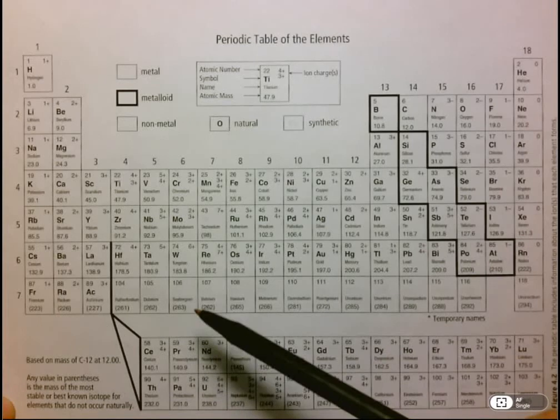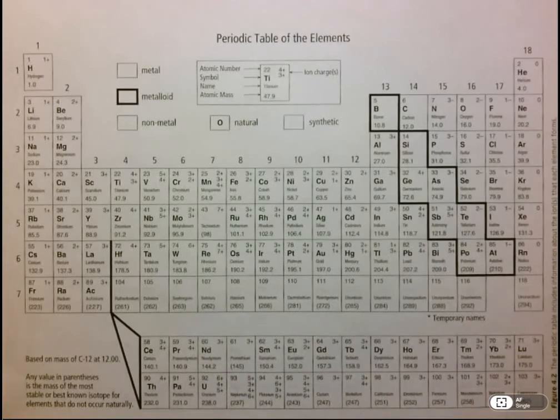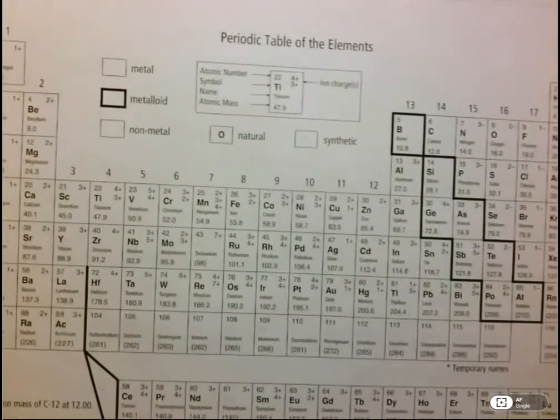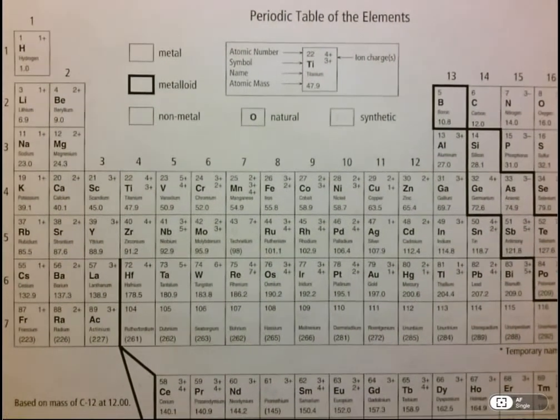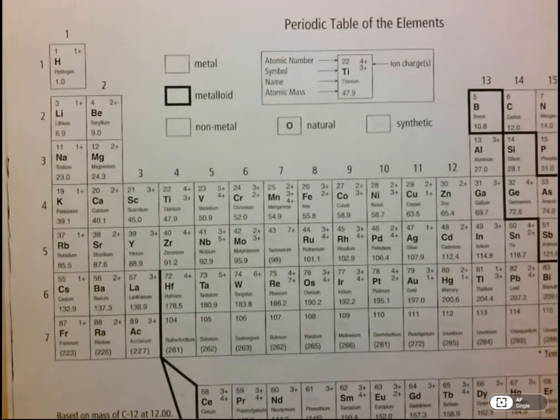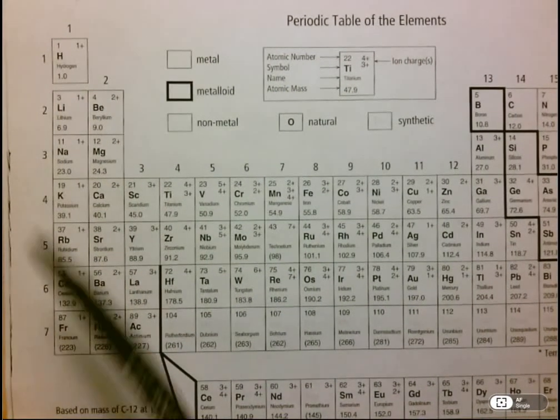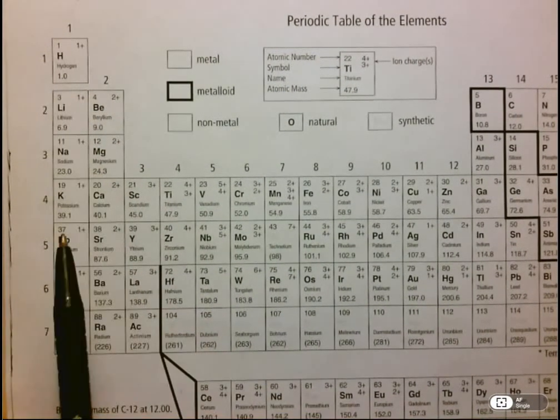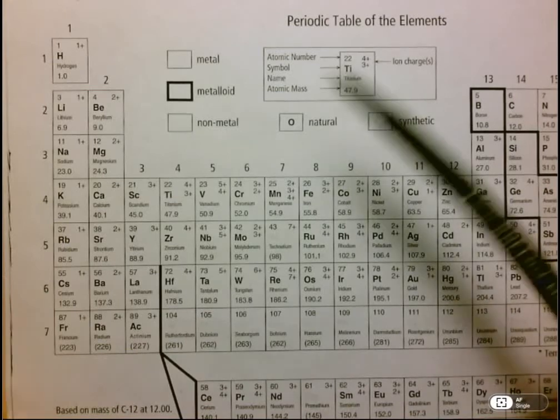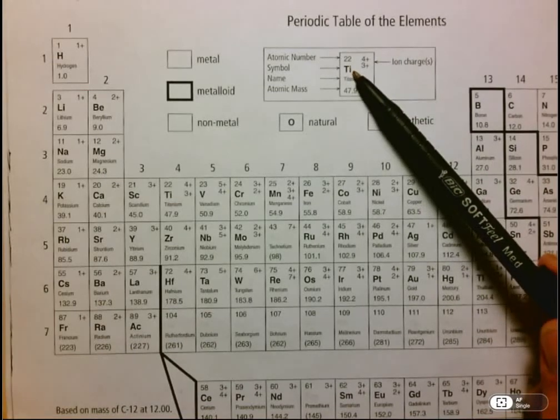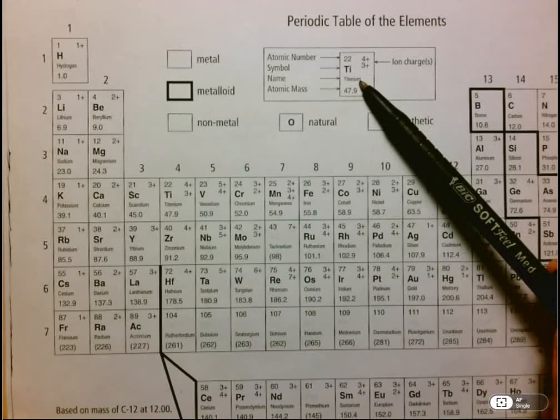These are the two main structures that we're going to be talking about with regards to these elements. Now let's take a look at what information we get in each box. You see some letters, some words, some numbers. Let's just do a little quick review as to what these mean.